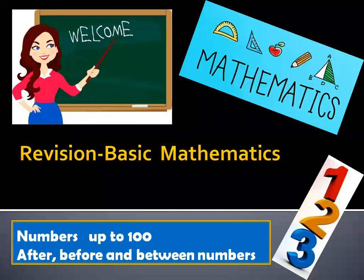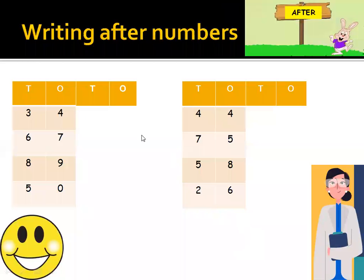Welcome back children. In previous activity we had learned about after, before and between numbers up to hundred. Let's try some more examples. We start with after numbers. After number means the number which comes after the given number, or when we count forward we get the after number.